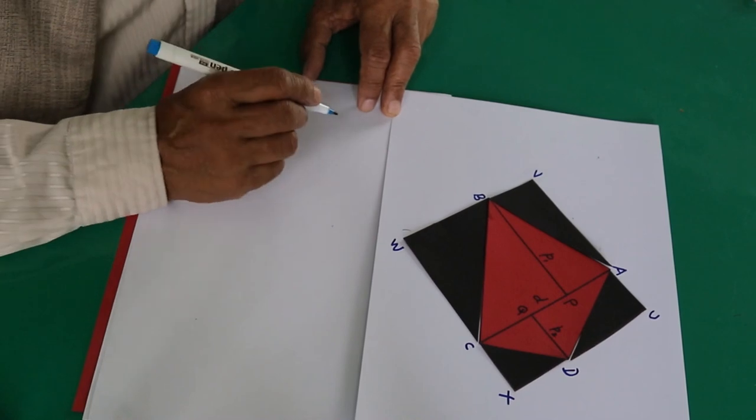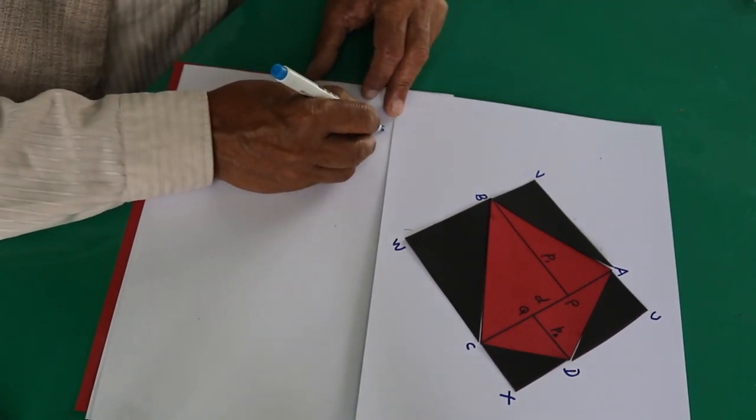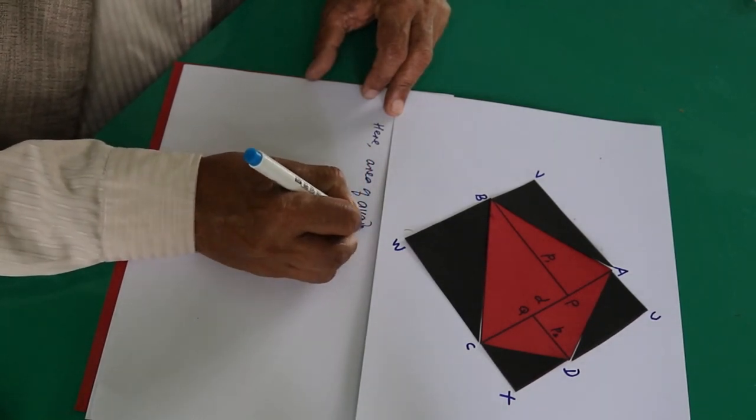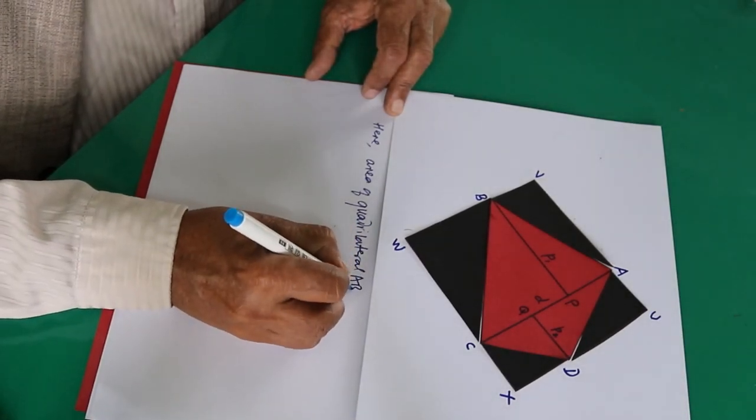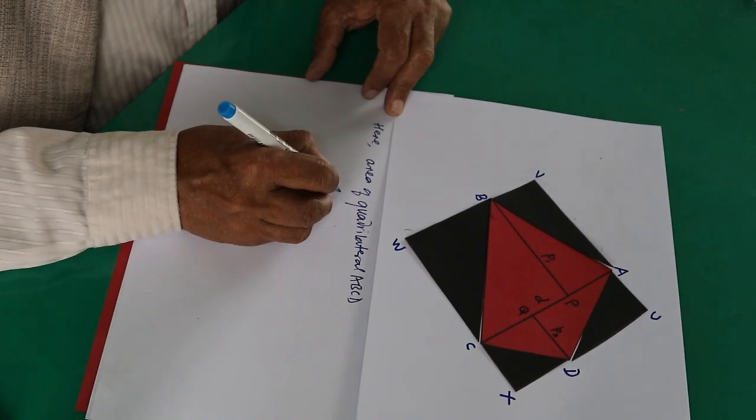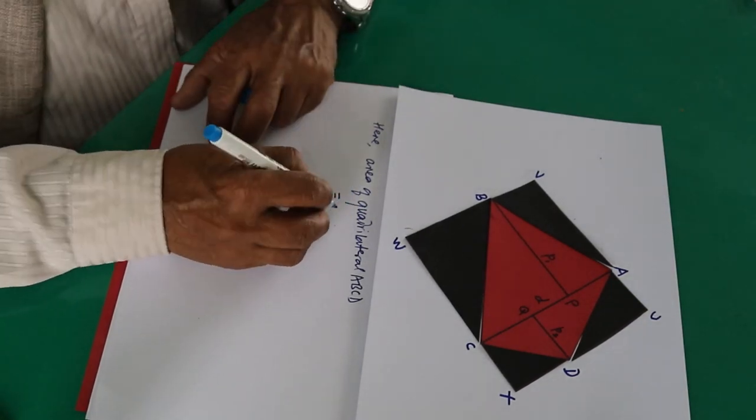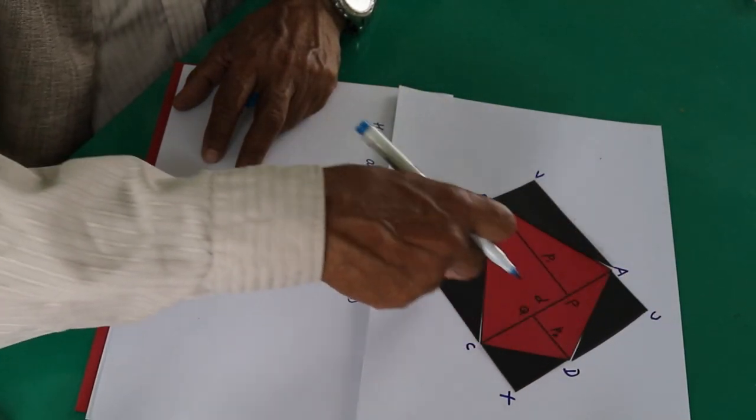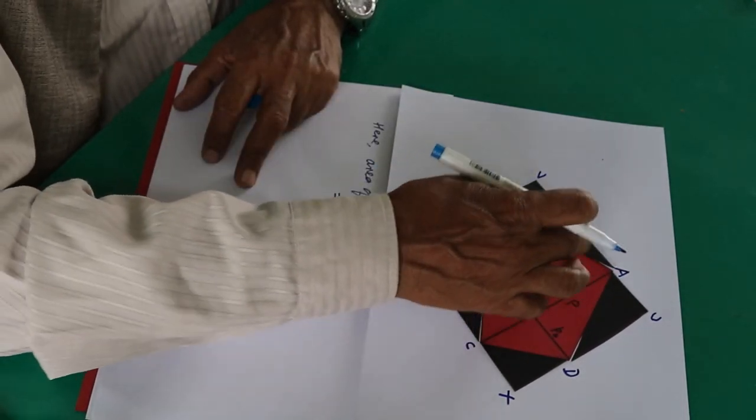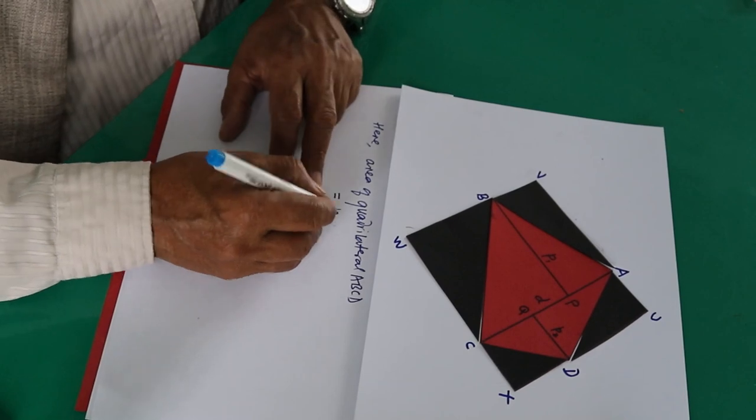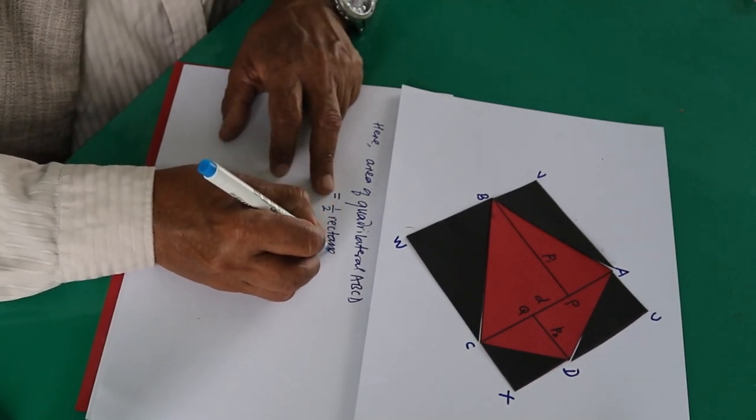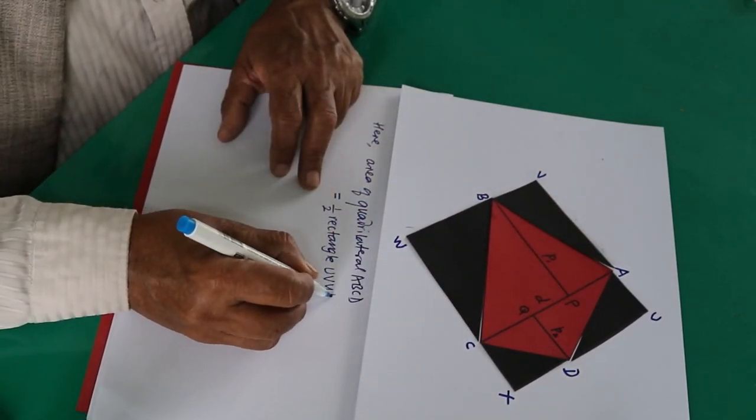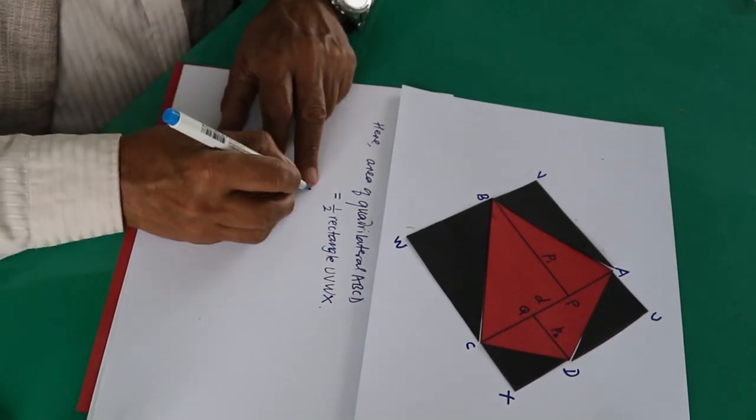Here the area of the quadrilateral ABCD is equal to half of this whole thing because two quadrilaterals have made the whole thing. That is why the quadrilateral ABCD is half of the rectangle UBWX. So this half is here.